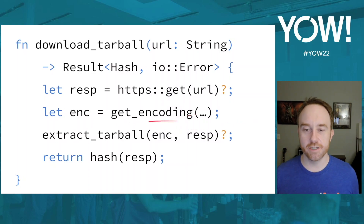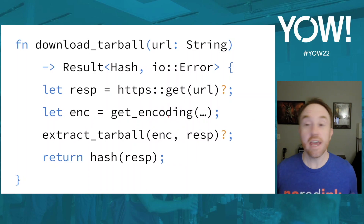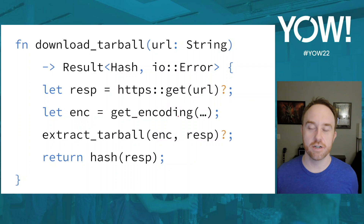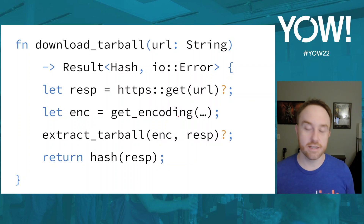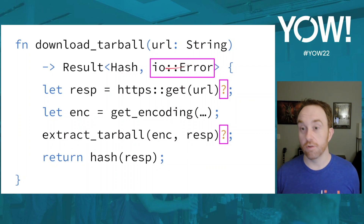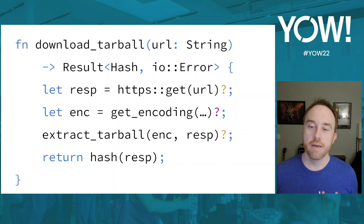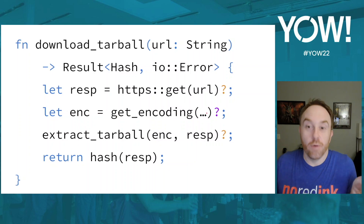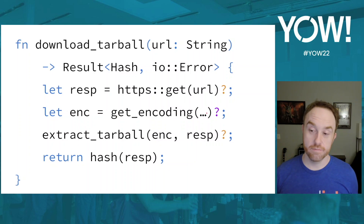But suppose get_encoding can also fail — for example, the encoding can't be inferred because there's no header, the URL has no file extension, or the extension is unsupported. get_encoding doesn't return an IO error; it returns something like an 'unknown encoding' error. That means I can't just use the question mark operator here, because the error types don't match.